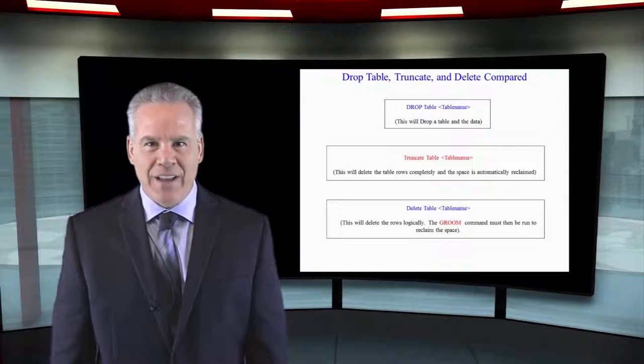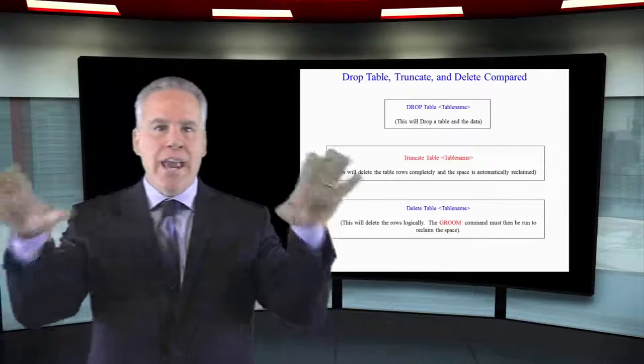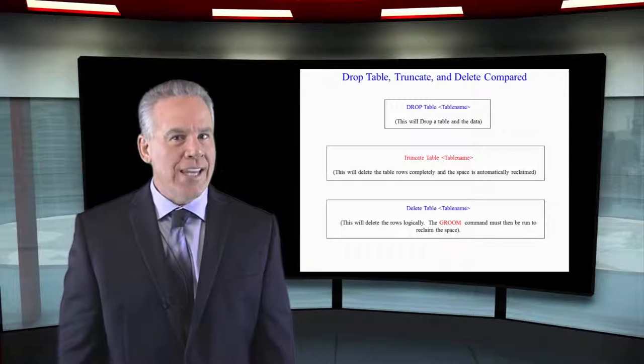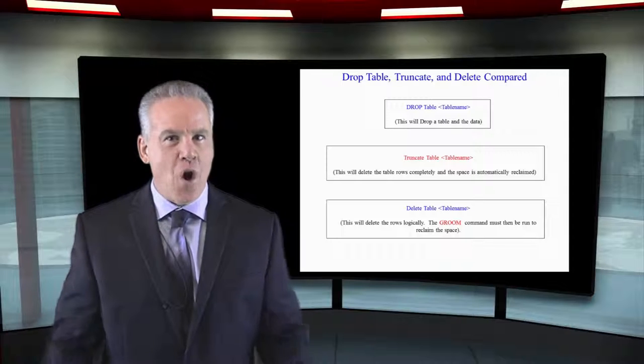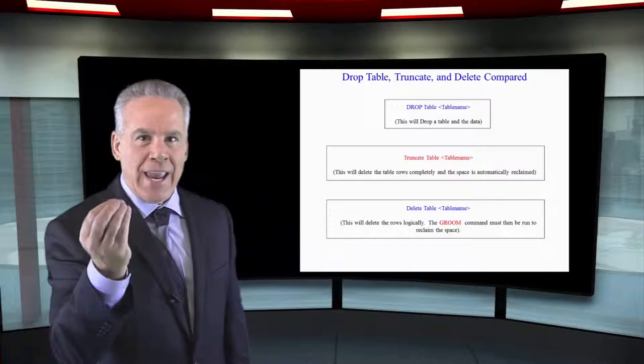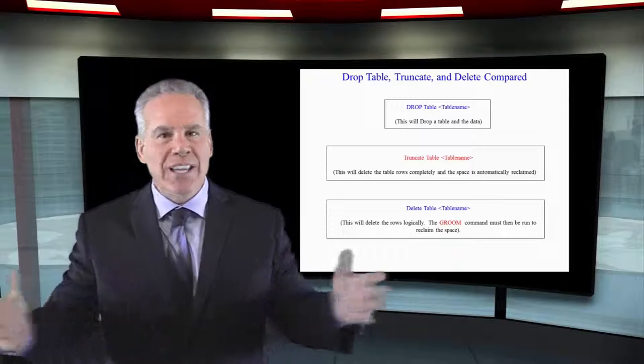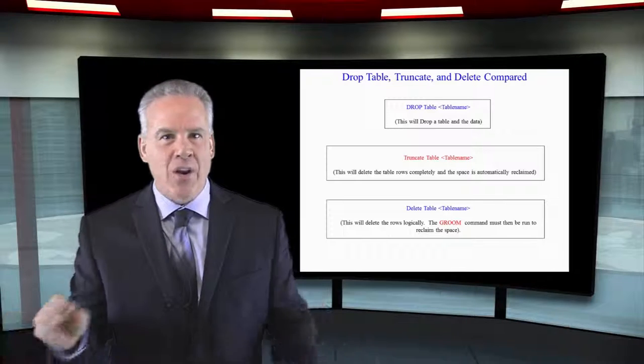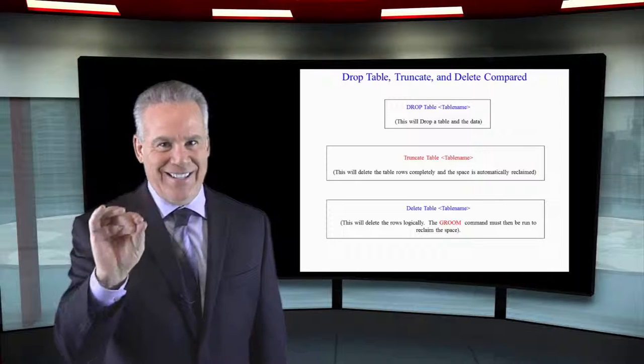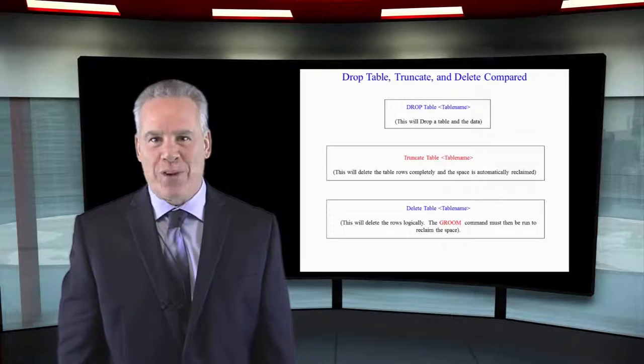Let's take care of some data. There's three commands. I can drop a table and the table's gone, of course the data's gone. I can truncate a table. All the data is gone, but the table still exists. Or, I can just delete from a table and all the rows are logically deleted, not physically. I'll still have to run the groom process.